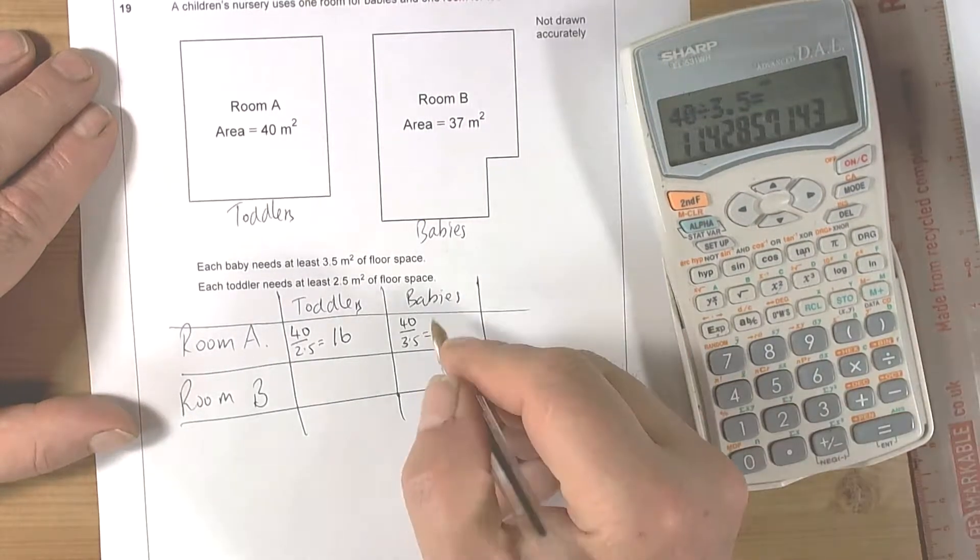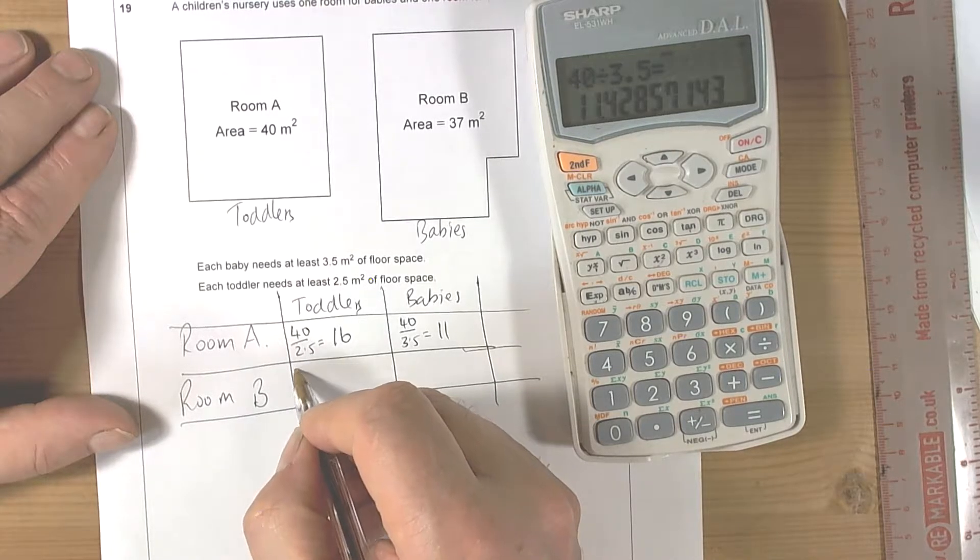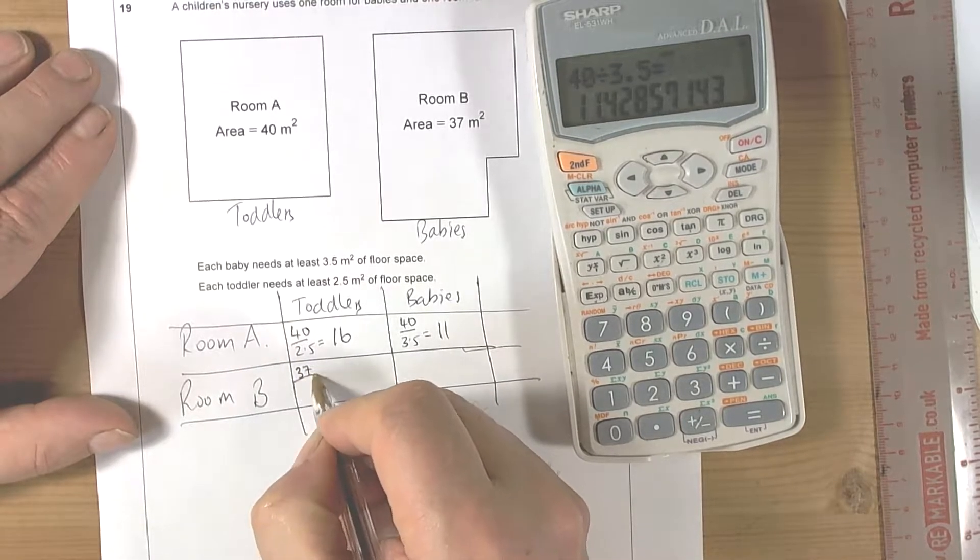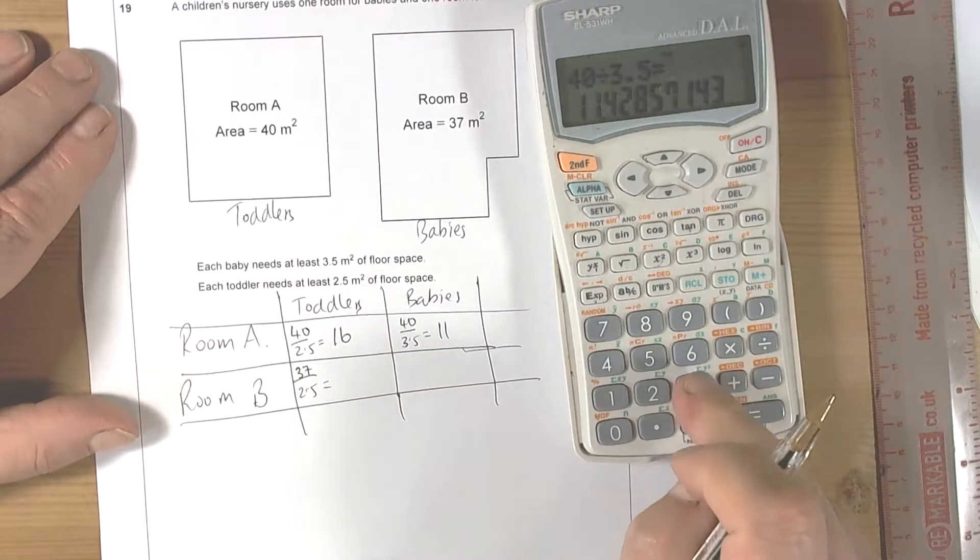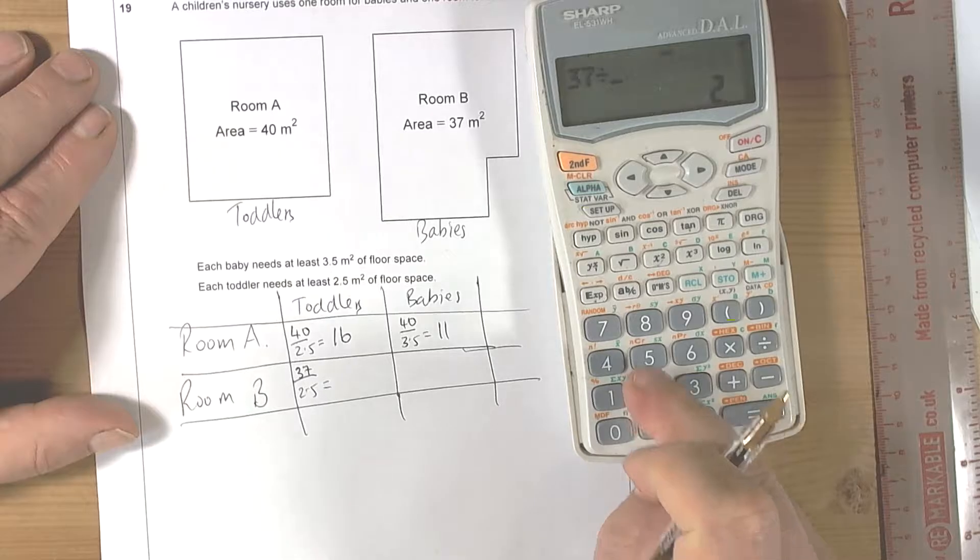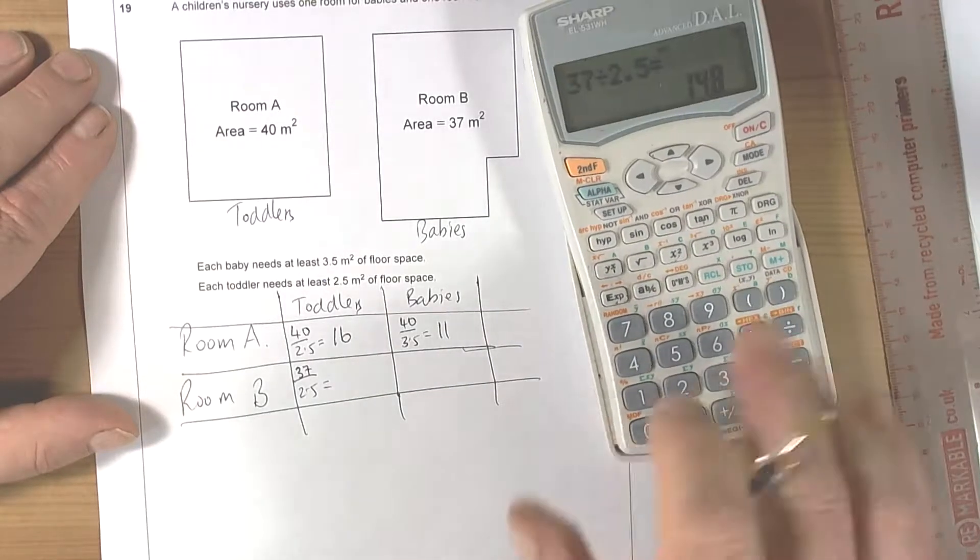Can't have a decimal point, so it must be a whole number. And for room B, the toddlers would be 37 divided by the toddler space of two and a half. So 37 divided by two and a half is 14.